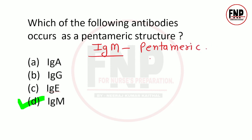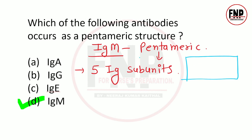IgM mein 5 immunoglobulin subunits hoti hain. Yaad rakhne ke liye: M ko bada likhiye aur uske 5 konon par ek ek immunoglobulin subunit lagaa dijiye - ek is kone par, ek is kone par, ek is kone par, ek is kone par, aur ek is kone par. Is tarah se yeh pentameric structure yaad rahegi.